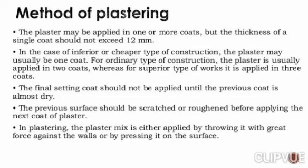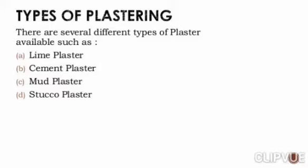In plastering, the plaster mix is either applied by throwing it with great force against the walls or by pressing it on the surface. There are several types of plaster available: lime plaster, cement plaster, mud plaster, and stucco plaster.